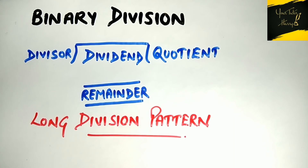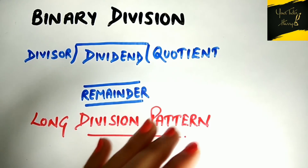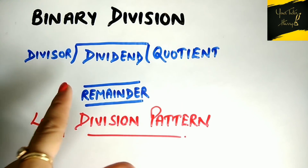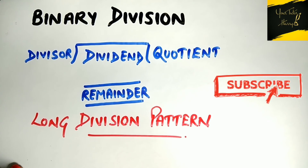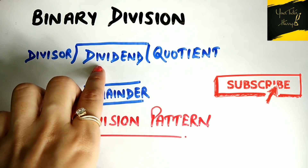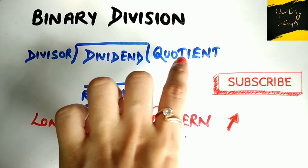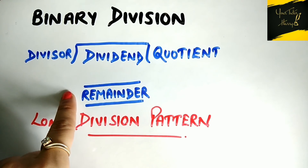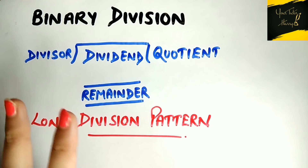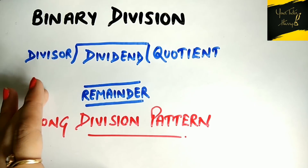In this video I will tell you how to solve the division problem of binary numbers step by step. You need to understand the long division pattern that we follow in our decimal number system. This pattern is called the long division pattern. As in decimal number division, we keep the dividend inside and the divisor outside. The divisor divides the dividend, we get the quotient on top, and if any remainder is left after subtraction, we place it here.